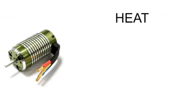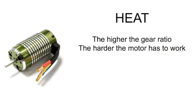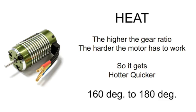There are several things affected by the gear ratio in your car. Heat would be one of them. The higher the gear ratio, the harder your motor is going to have to work, and it's going to get a lot hotter a lot quicker. Most manufacturers give a limit of about 160 to 180 degrees — you don't really want your motor to get any hotter than that, otherwise you're going to start damaging it. You can check that with either an infrared thermometer or a simple rule of thumb: if you can reach in and put your finger on the motor and hold it there for three or four seconds, you're probably less than 160 to 180 degrees. If you can't hold your finger there, your motor is probably getting too hot.